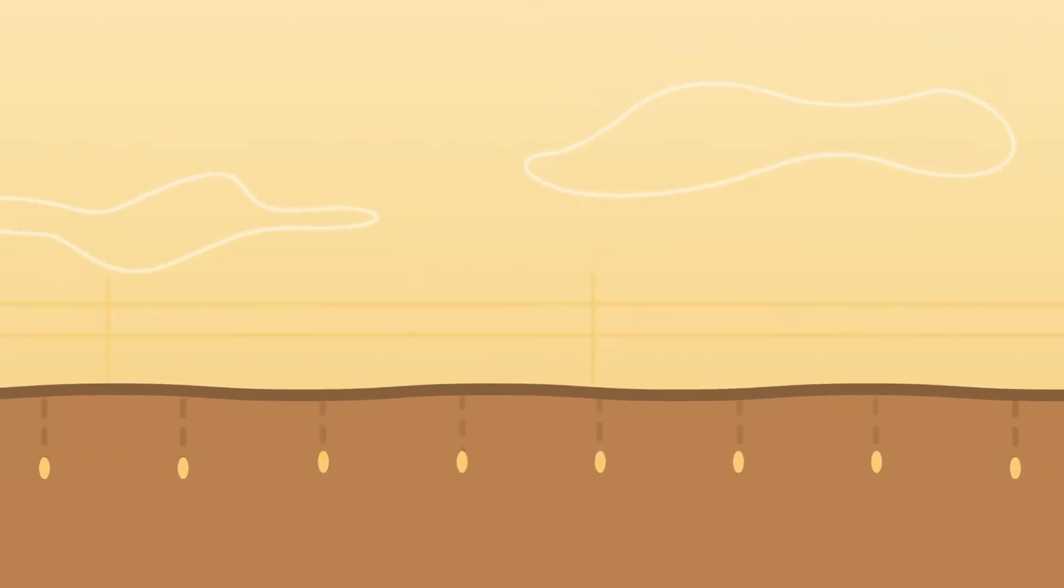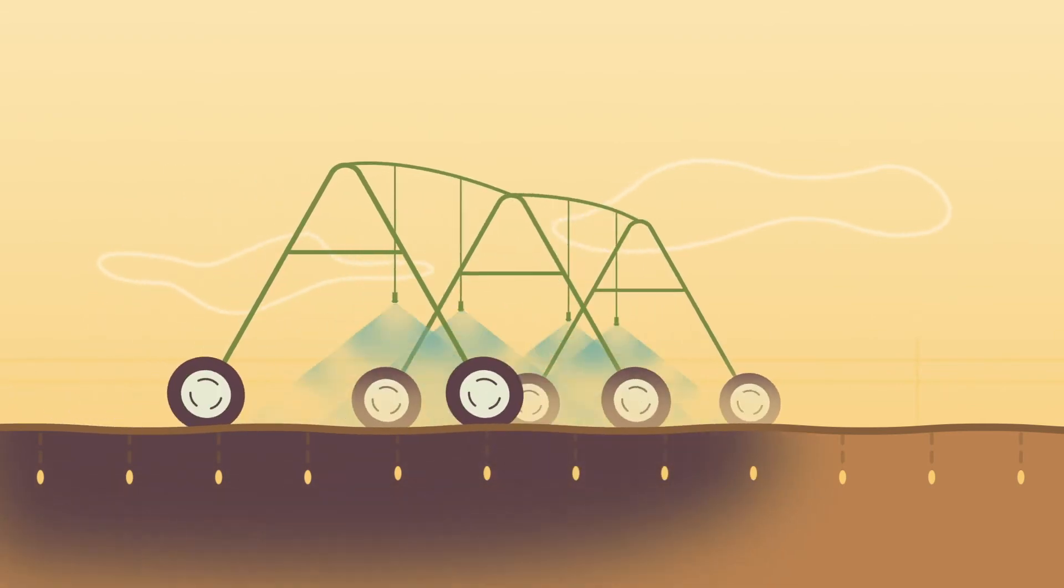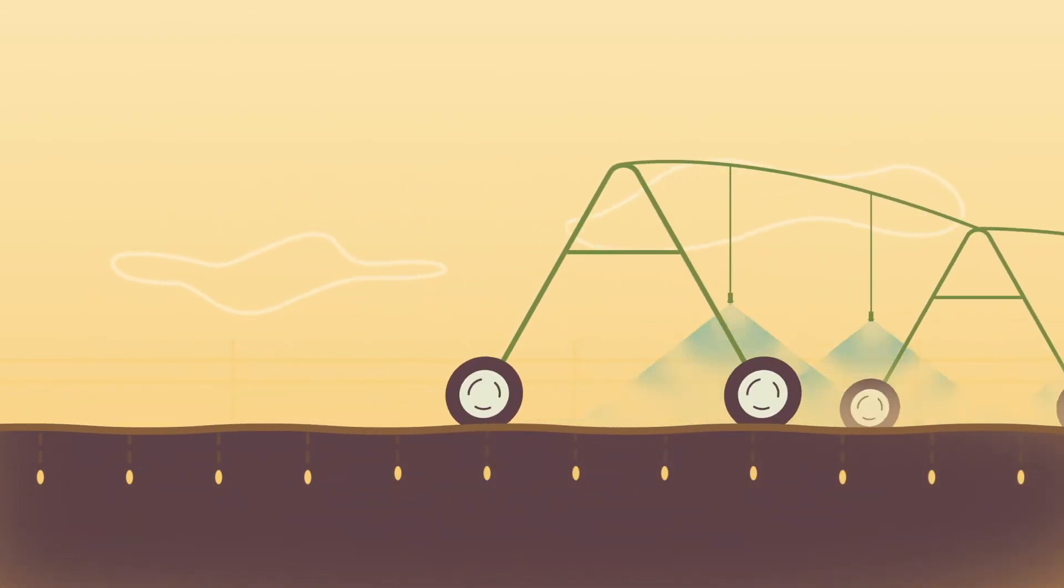Now we set up the irrigation. Advanced technology ensures that the seeds get just the right amount of water and fertilizer that they need. And then it's time to wait.